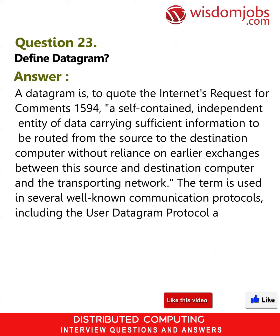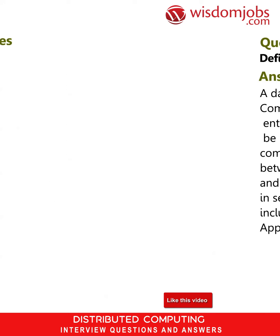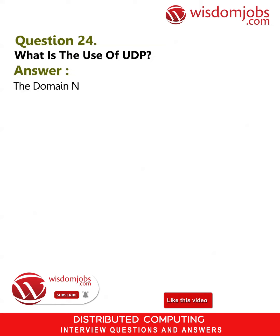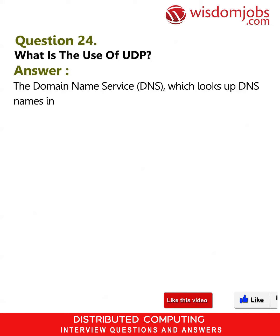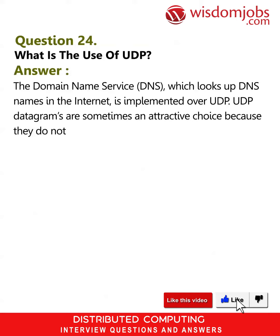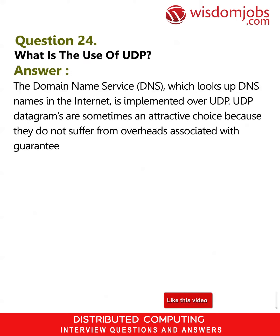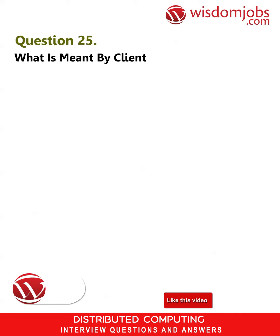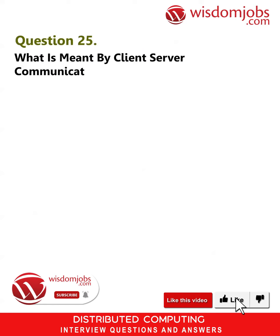Question 24: What is the use of UDP? Answer: The Domain Name Service (DNS), which looks up DNS names on the internet, is implemented over UDP. UDP datagrams are sometimes an attractive choice because they do not suffer from overheads associated with guaranteed message delivery.